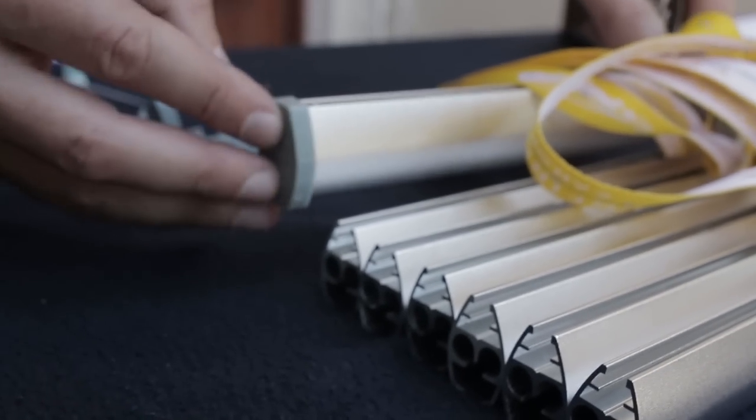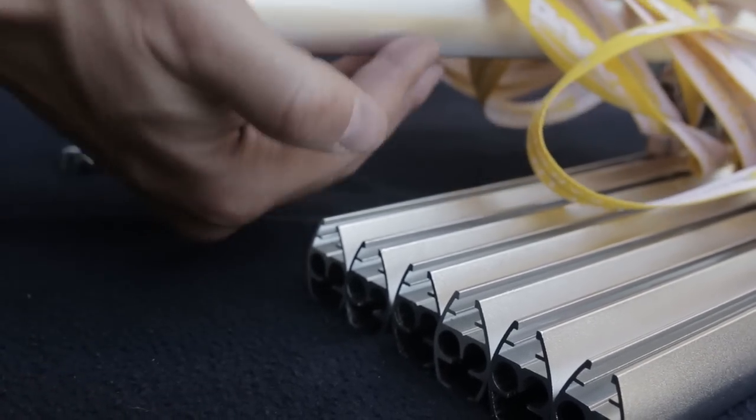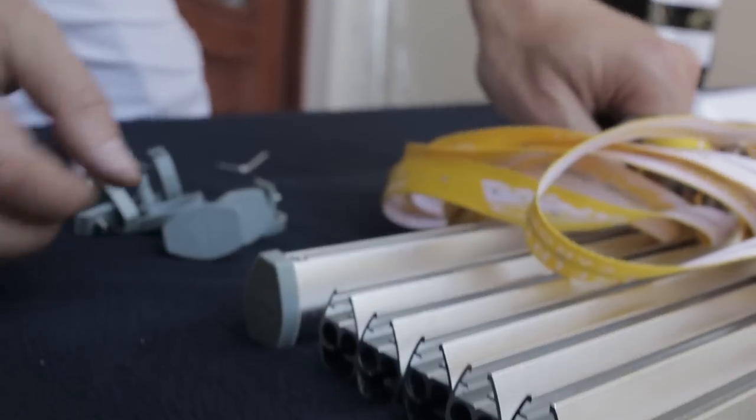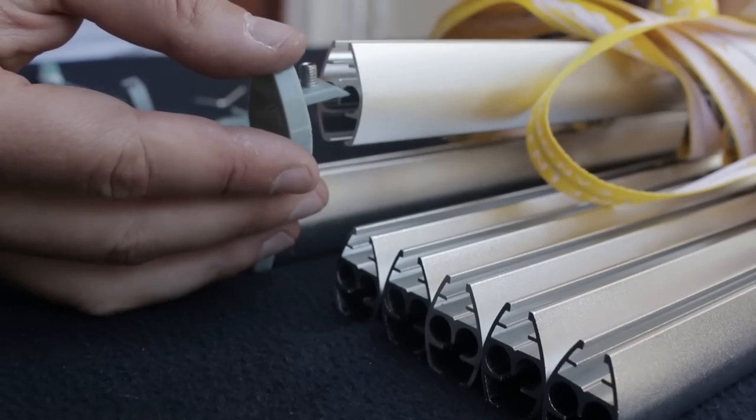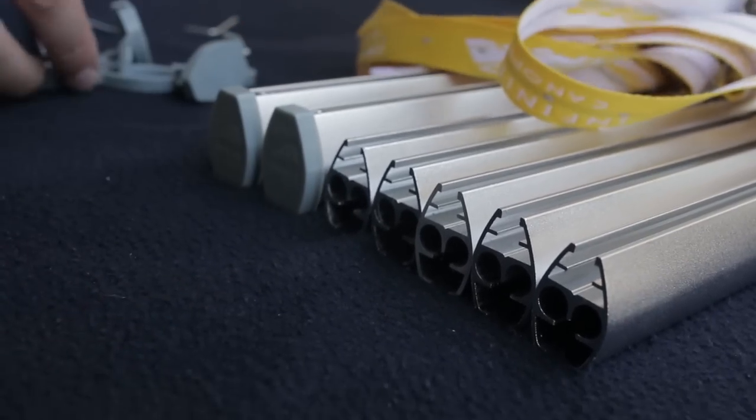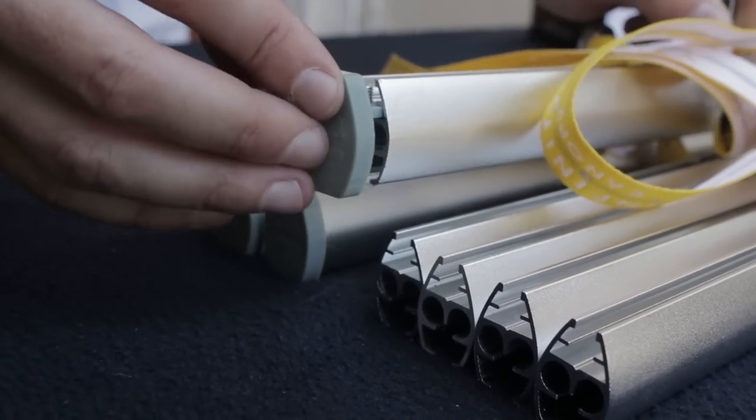End-caps prevent the canopy panels from sliding out of the profile. Loosen the end-caps screw and insert one into each profile, one side only. Tighten the screw to secure the end-caps in place.